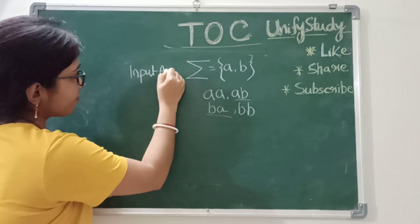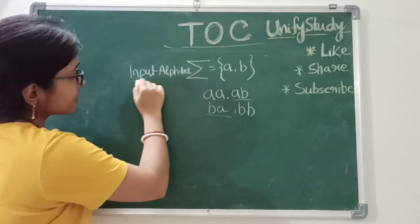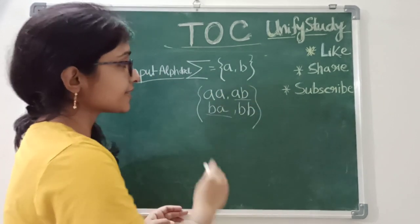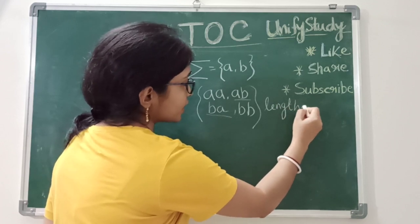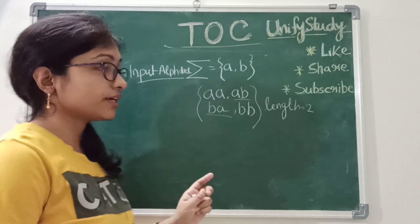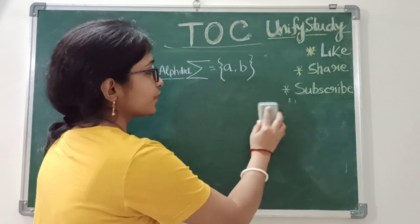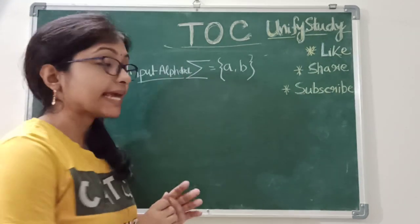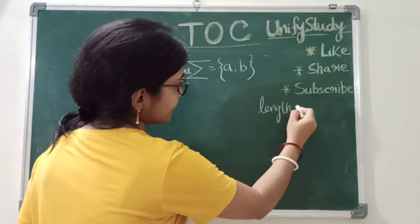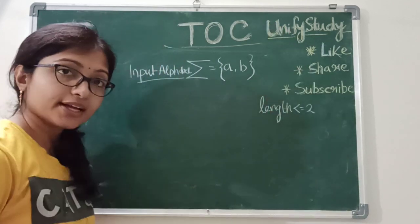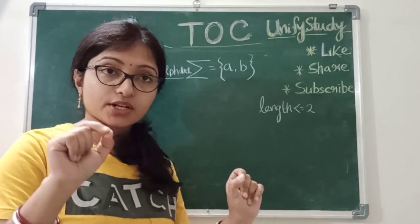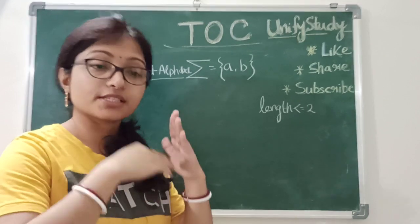Using input alphabet Sigma {A, B} we are making these words. The length here equals two. Now in the same way, if I am asking you to make the words where length is less than or equal to two with the same alphabet — think about that. What are the words you can make with length less than or equal to two? This is a very important concept of TOC and also very important for understanding languages.